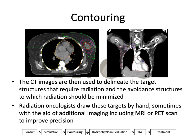Typically radiation oncologists draw these targets by hand, sometimes with the aid of additional imaging, particularly pre-treatment MRI or PET scans. And then there are many other resources such as the RTOG or NRG contouring atlases, as well as reference cases in places such as e-contouring.